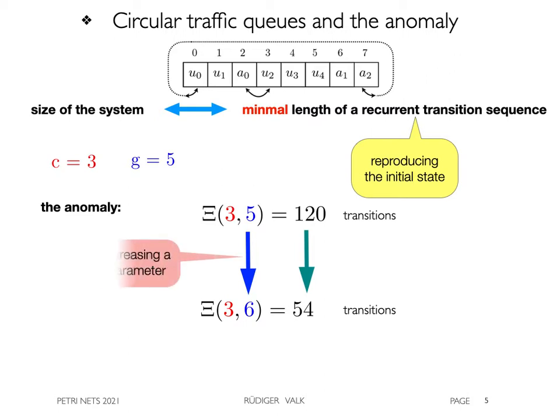Hence, increasing a parameter can reduce the size of the system. This is what we call the co-car anomaly as it is not observed when the co-cars are replaced by undistinguishable items like gaps.